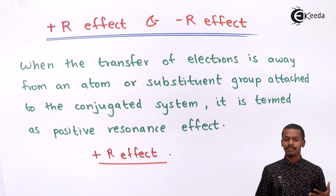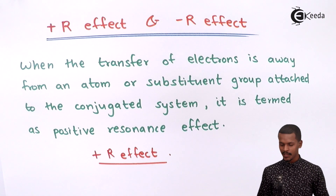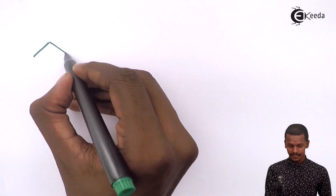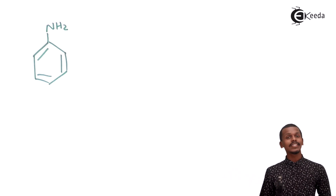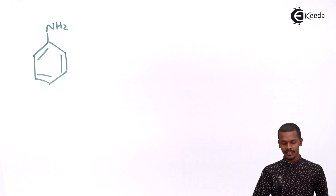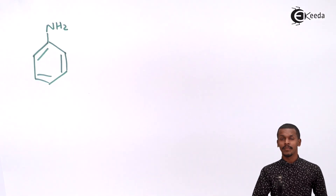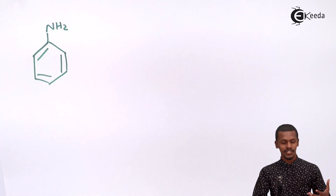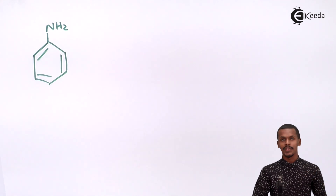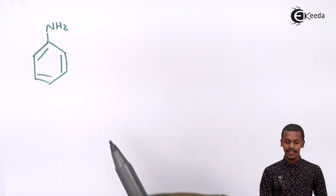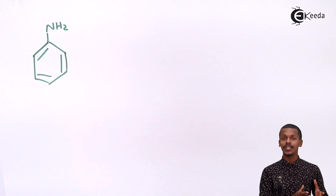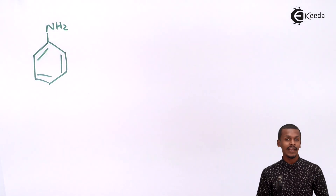Let me explain this with the help of an example. This is an aniline molecule represented here. Since we are talking about Plus R effect — the delocalization of electrons away from the substituent — in this case the substituent is the NH2 group. This NH2 group has been associated to the conjugated system, which is the benzene ring.